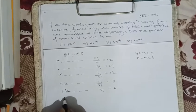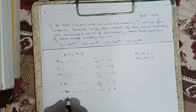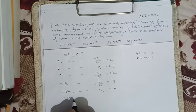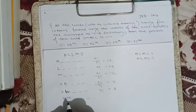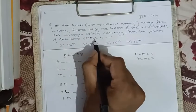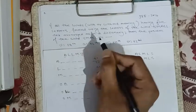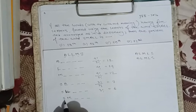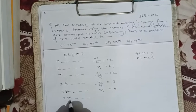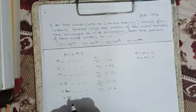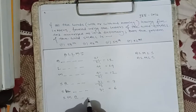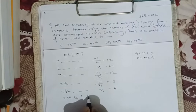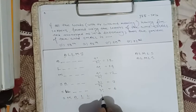Now, for words starting with 's' and then 'm': the remaining 3 positions — we notice we are finding the position of SMALL: s, m, a, l, l. When we fix 's' and 'm', in dictionary order 'a' comes first, and then the 2 remaining positions are both 'l', giving 'll'. So this word is exactly SMALL, and it occupies 1 position.